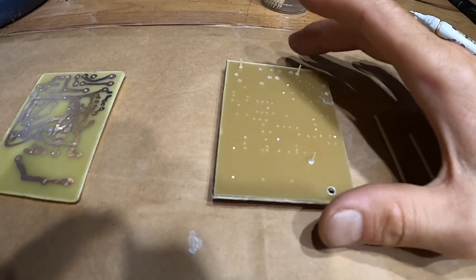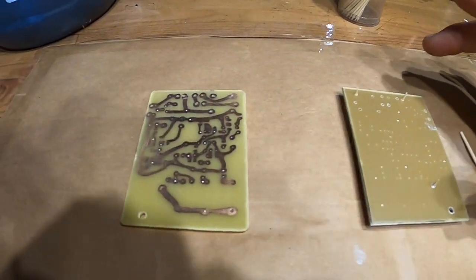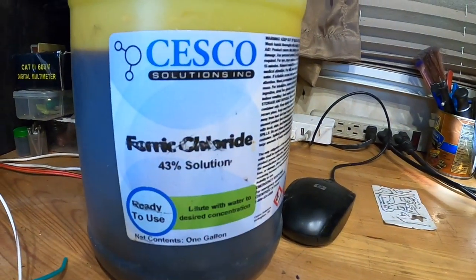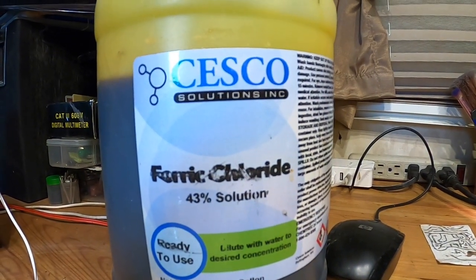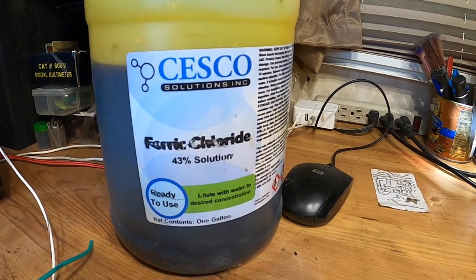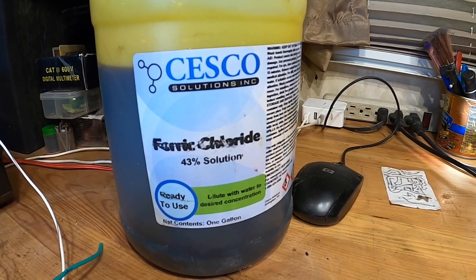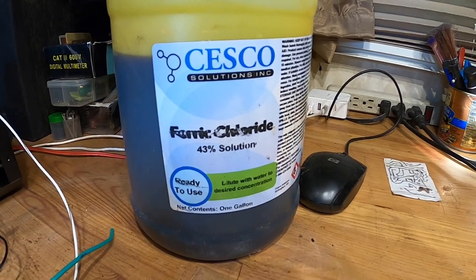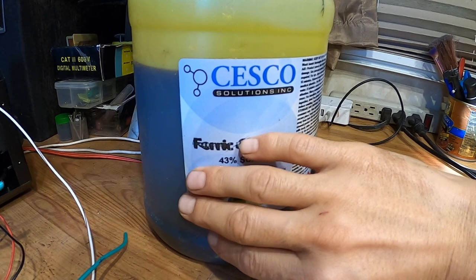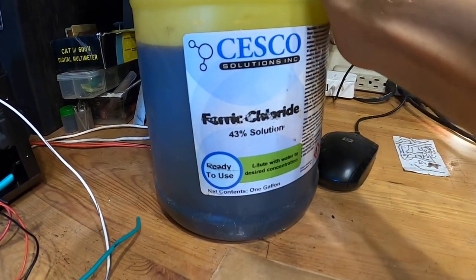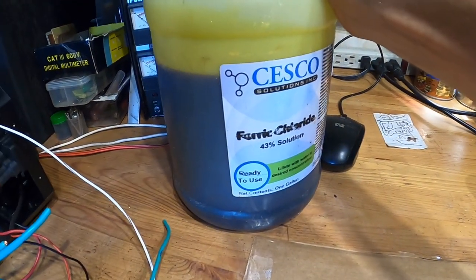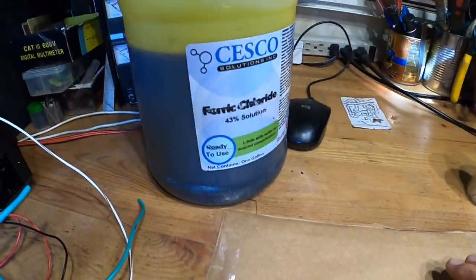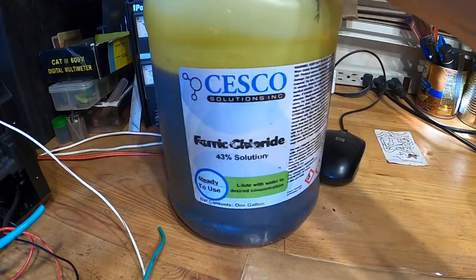So the next step is etching. It takes about 20 minutes and I use a ferric chloride solution. I reuse it for many times until it doesn't work, and it works very well. This can, this is enough here to etch probably a thousand of these, so you don't need much. This is a strong solution here.